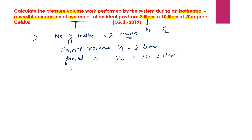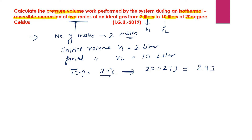Temperature is also given — 20 degrees Celsius. Since we use SI units, we convert to Kelvin: T = 20 + 273 = 293 Kelvin.